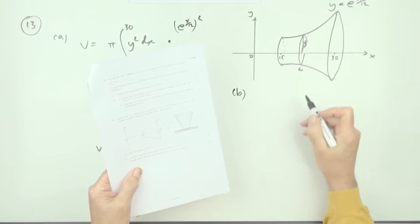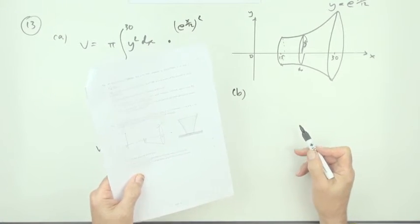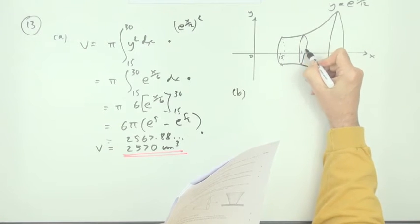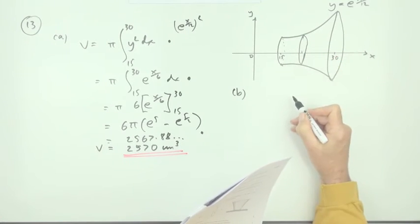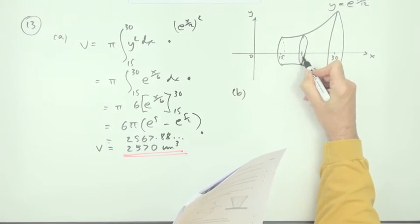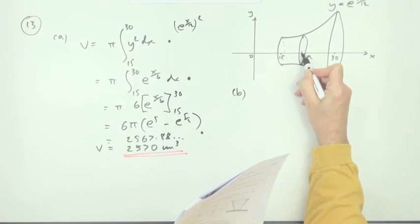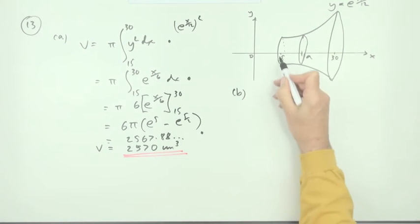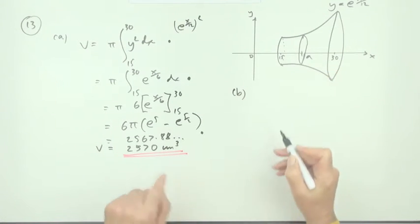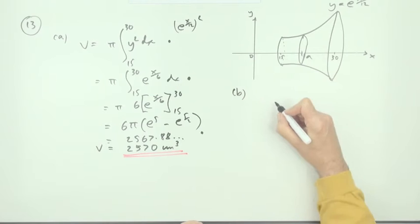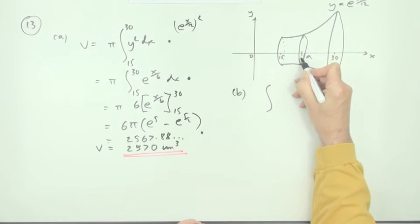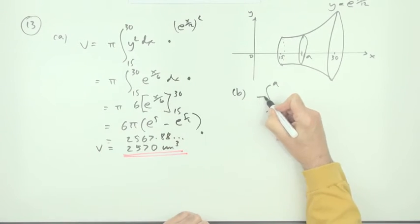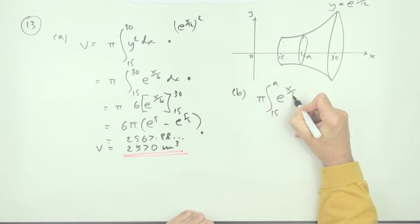Now for part b, a line has to be put in the bowl to indicate when it's half full. Let's pretend that's the half full line. What's the x coordinate of the line that splits the volume in two? In other words, 15 up to what would give you half of this? The volume of this portion which goes from 15 to a.